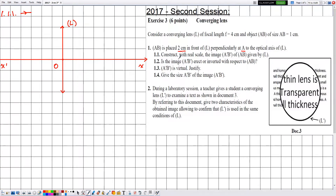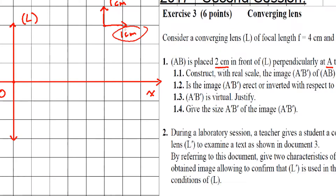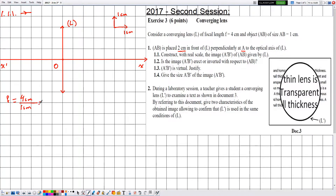With real scale, 1 centimeter corresponds to 1 division along both axes. We need to place the image focus and the object focus. The focal length is 4 centimeters, which divided by the scale along the x-axis gives 4 divisions. Since light propagates left to right and the lens is converging, the object focus F is 4 divisions to the left, and the image focus F' is 4 divisions to the right.